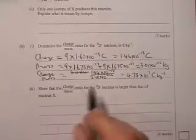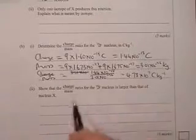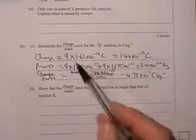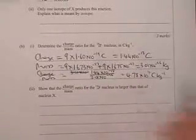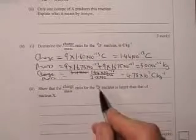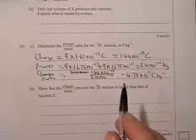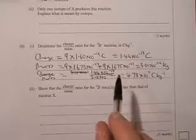The last part shows that the charge to mass ratio for the fluorine nucleus is larger than that of nucleus X. So there's two ways of doing it. We could go through this same procedure for nucleus X, using the number of protons and neutrons that we've calculated. But there is a smarter way of doing it: to think about the difference between the two nuclei.